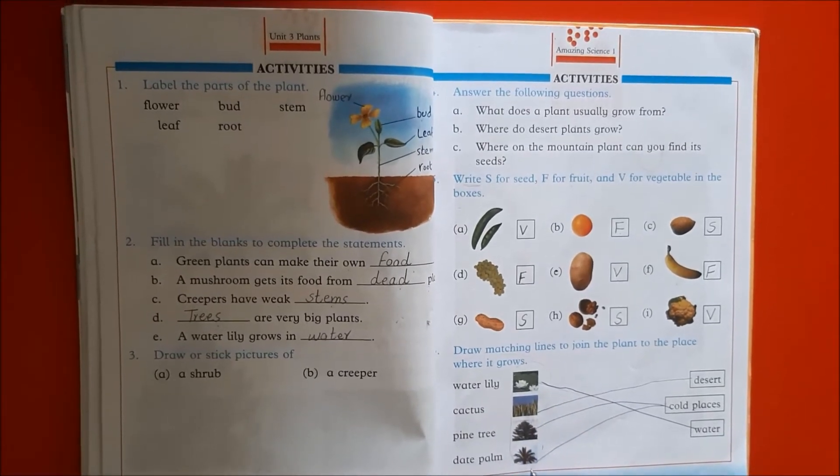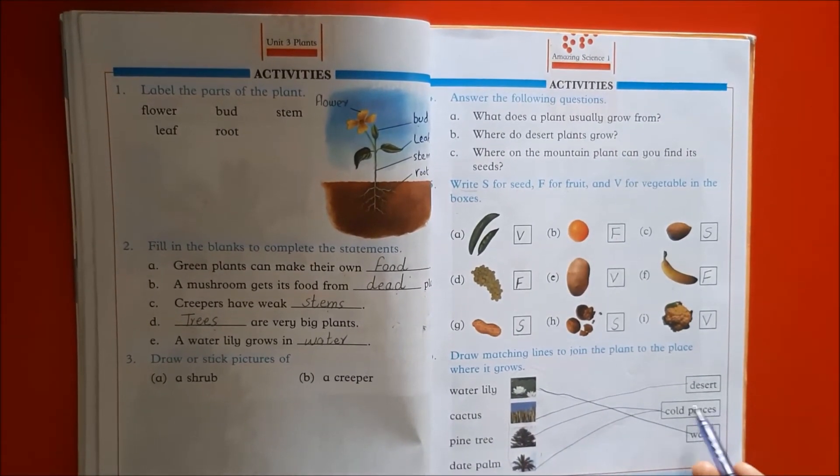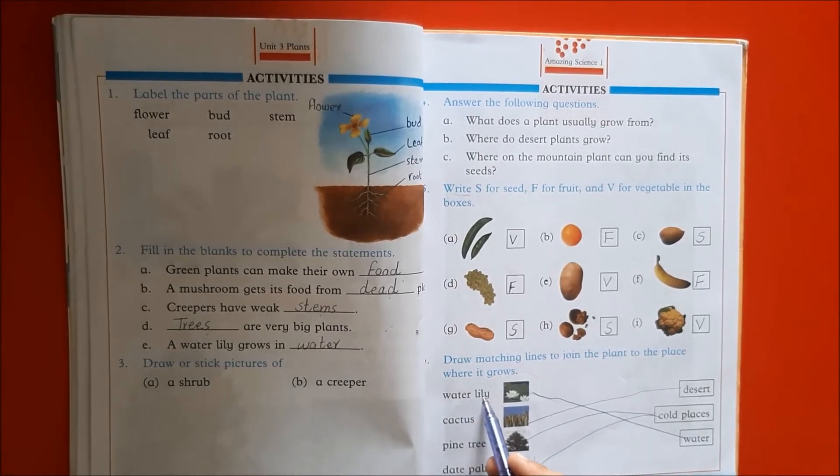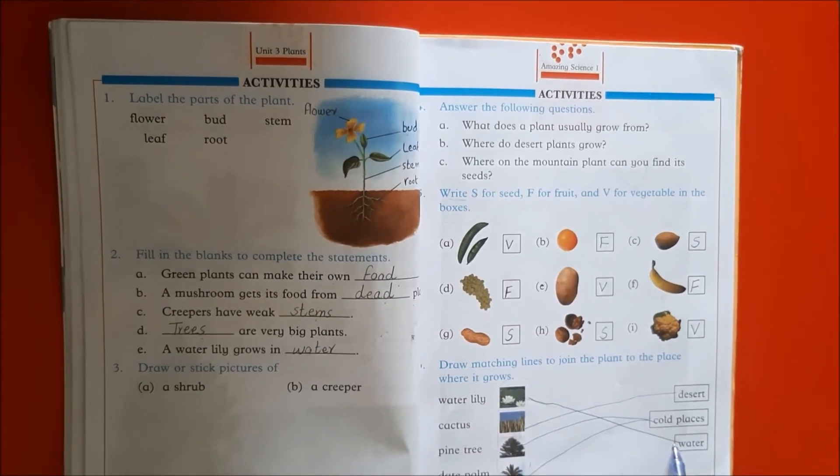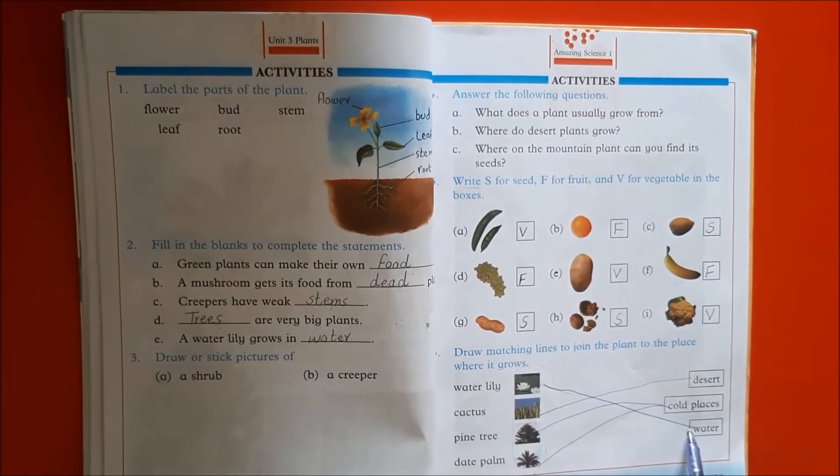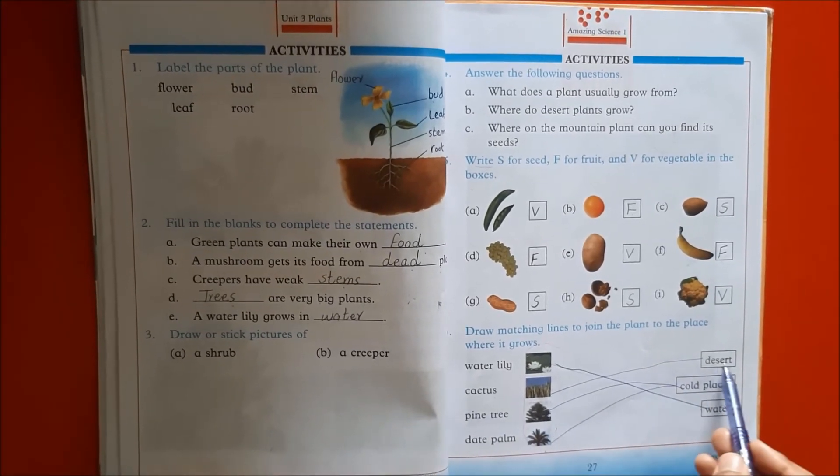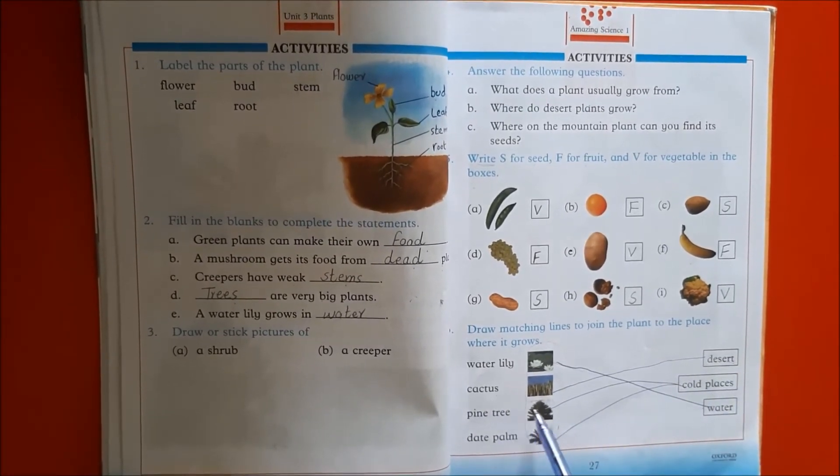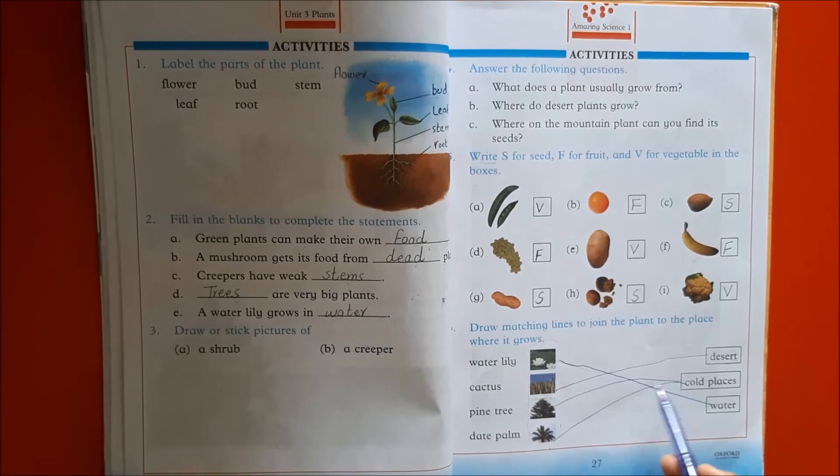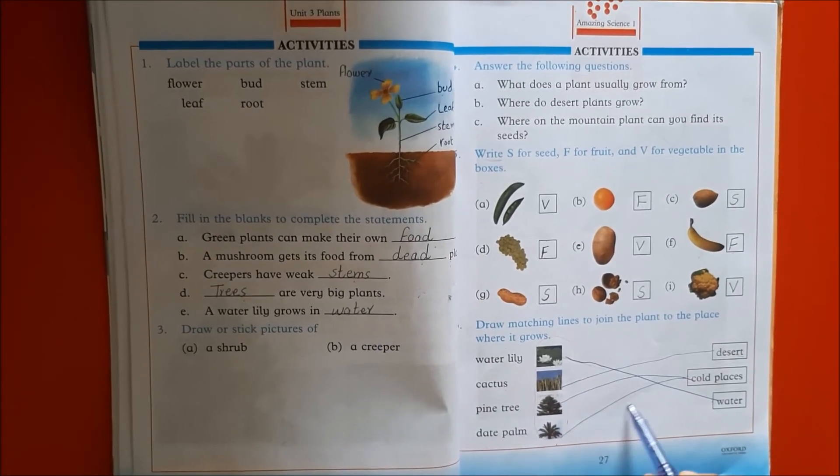We should match the lines to where these plants grow. So, water lily, water. Cactus, desert. Pine tree, cold places. Date palm, cold places.